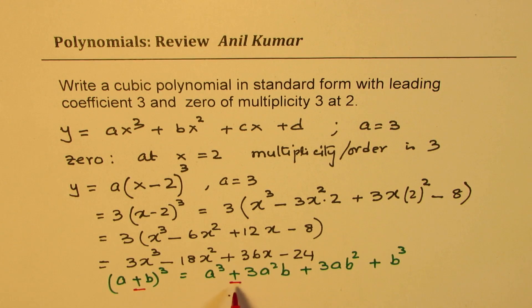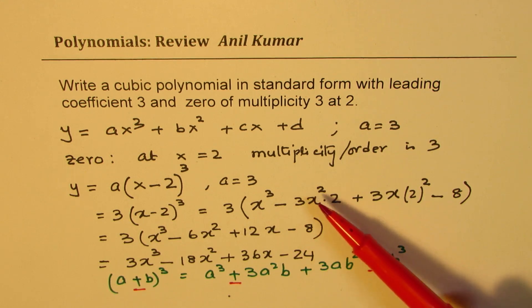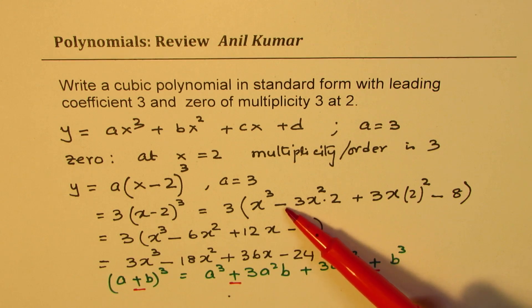This becomes an easy way of remembering the formula. We have a negative term here, 3x² times b. b is 2 for us, rather -2, so that -2 makes it negative.